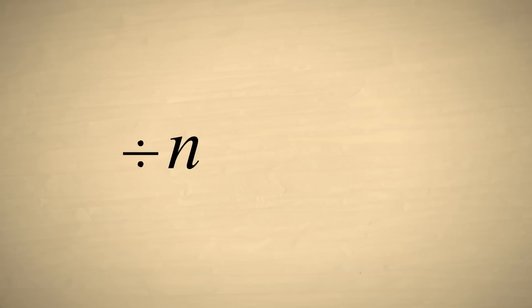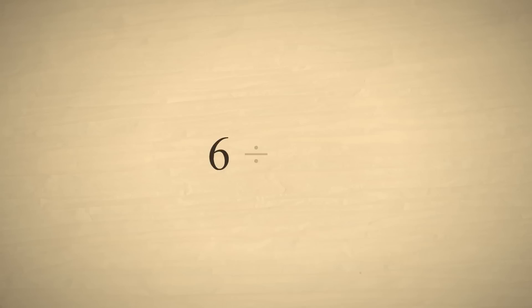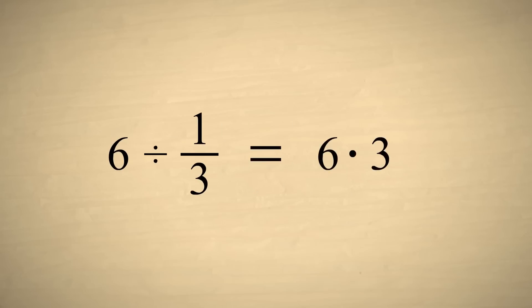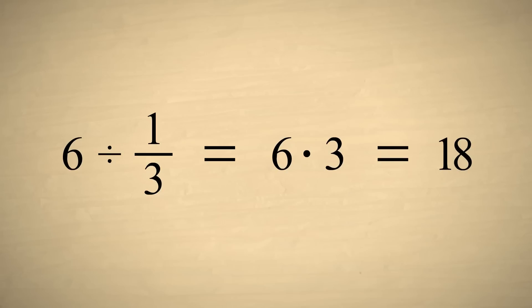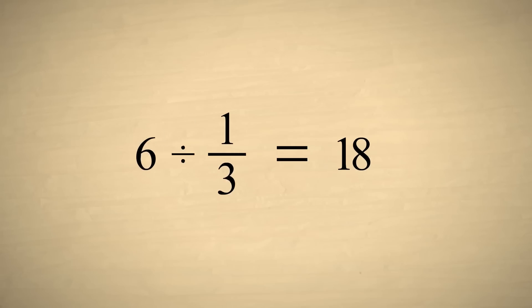Since dividing by a number gives the same result as multiplying by its reciprocal, reciprocals are useful for turning division problems with fractions into multiplication problems. For example, if we want to divide six by one-third, we can just multiply six by the reciprocal of one-third — in other words, six times three, which is equal to eighteen. So six divided by one-third is eighteen.